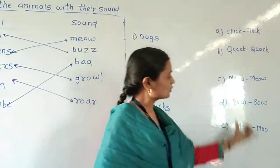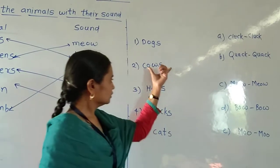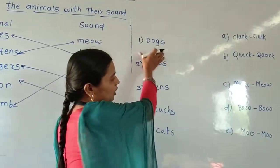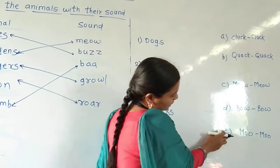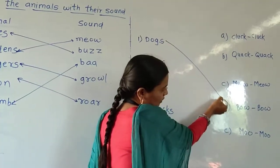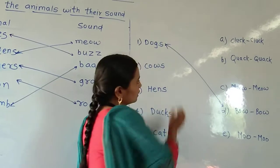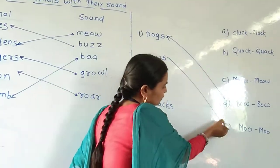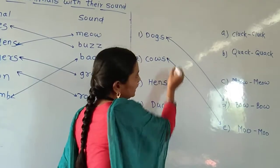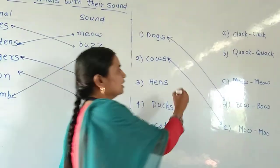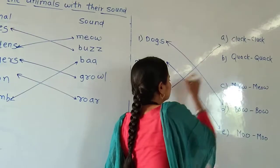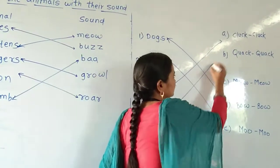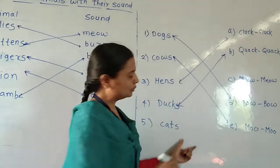Now we will match animals with their sounds. Dogs — the sound of dogs is bow bow. Then cows — moo moo. Then hens — cluck cluck. Then ducks — quack quack. Next, cats — mew.